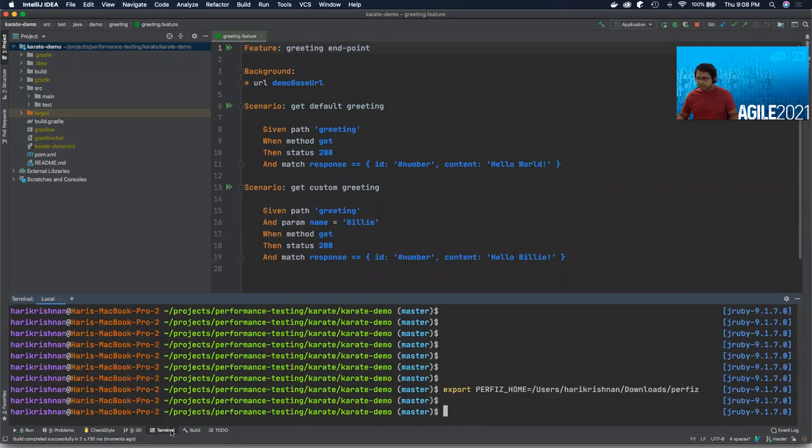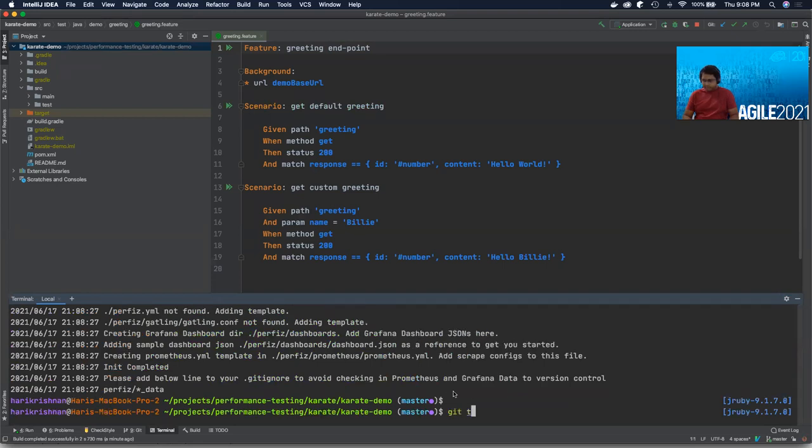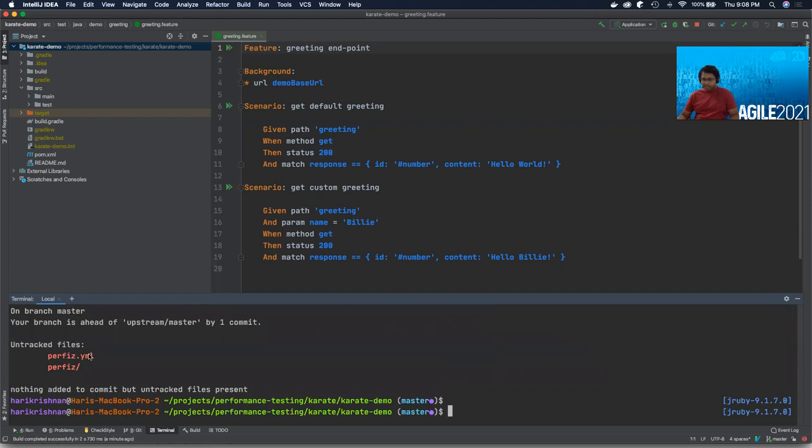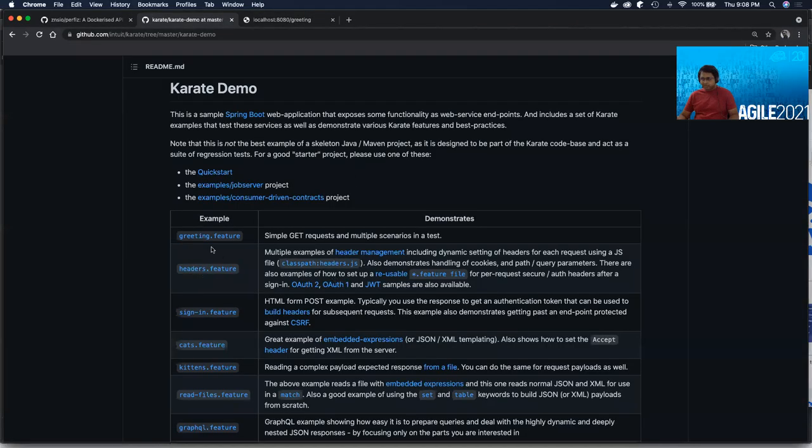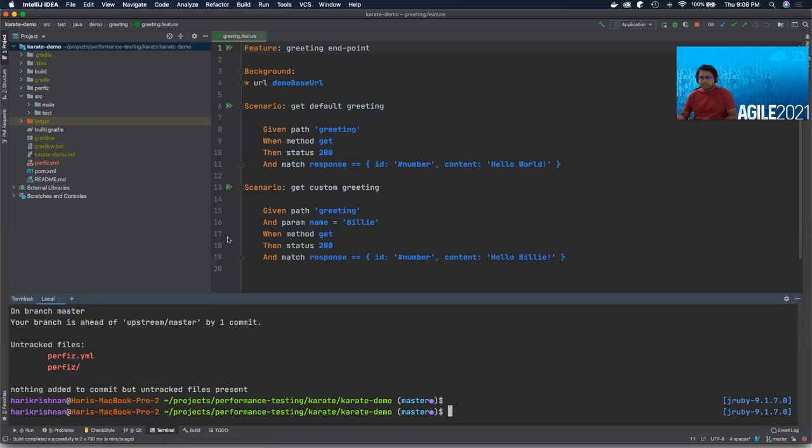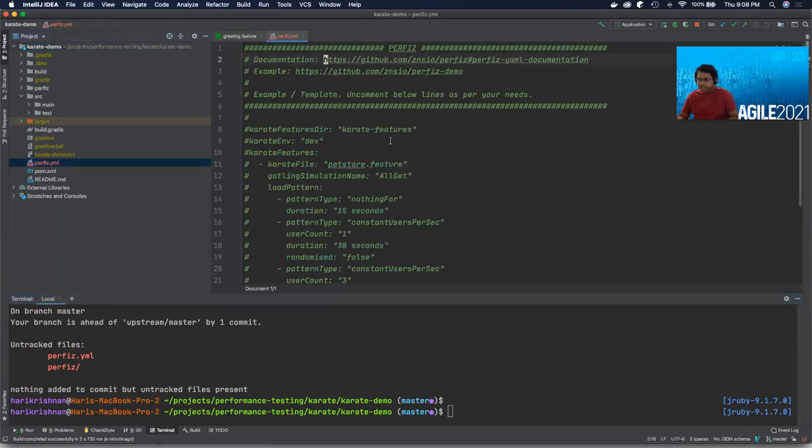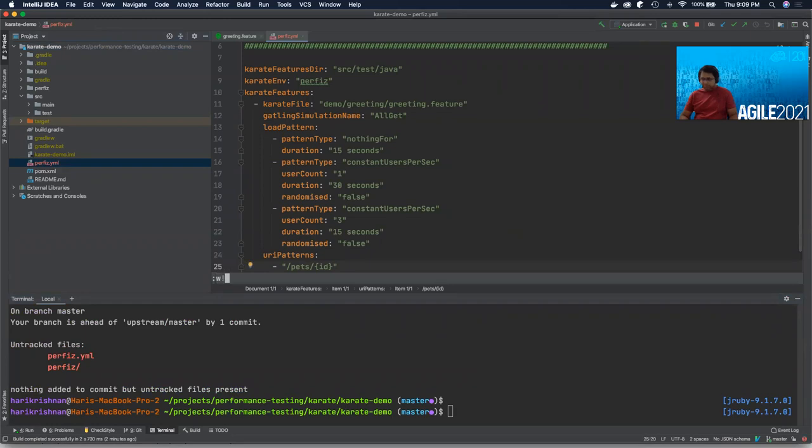At this point, I need to start integrating perfis with this application. How do I do that? I go back to my terminal. All I need to do now is, since I already have the environment variable, I run perfis.sh init on this project. So you'll see that perfis has added a configuration file, a YAML file, and another folder which has some basic templates and configuration. But primarily, it has added this YAML configuration file. What I'd like to do is take the first feature, which is the greeting.feature file, which is a Karate API test and convert that into a performance test.